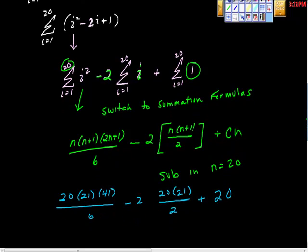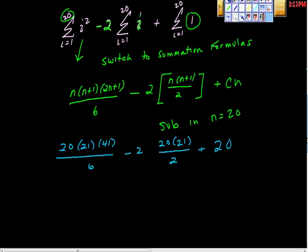Then I started pounding away at this math, and the math just got awful. But anyway, this times this times this divided by 6 is 2,870. This 2 and this 2 cancel, but it's negative, so minus 420, plus 20 is equal to, and lo and behold, it is equal to 2,470.